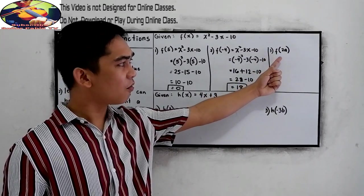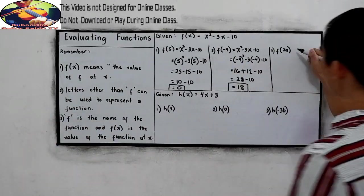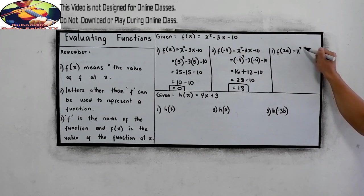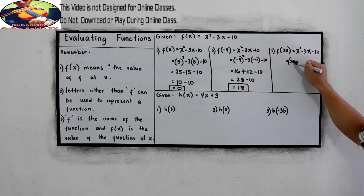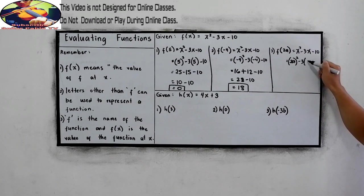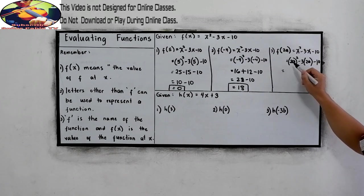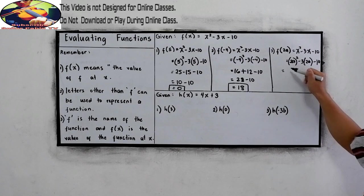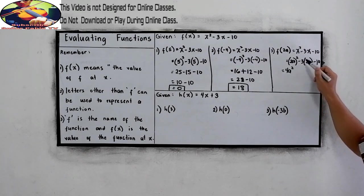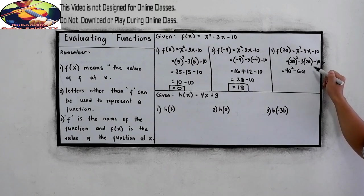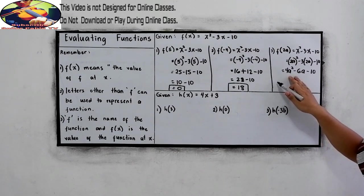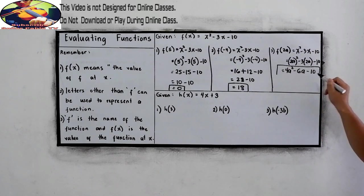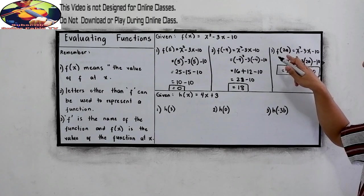And the last, f(2a). So, again, copy: x squared minus 3x minus 10. So, substitute. We have 2a squared minus 3 times 2a minus 10. 2 squared, that is 2 times 2, gives us 4, then a squared. Negative times positive, that's negative. 3 times 2, we have 6. Then, copy a minus 10. Now, combine like terms. But in this case, we cannot combine a squared to a. So, this will be our answer when x is equal to 2a.